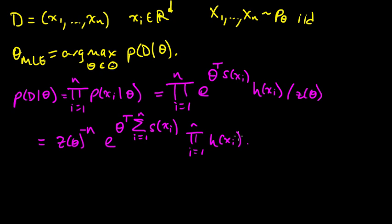Okay. So now what are we going to do? We have our expression here. And now we want to maximize this with respect to theta. Let me give this sum a name. Let me just rewrite the whole thing here. z of theta to the minus n, e to the theta transpose. Let's call it s of d. That's pretty good. h of xi, product over i's.